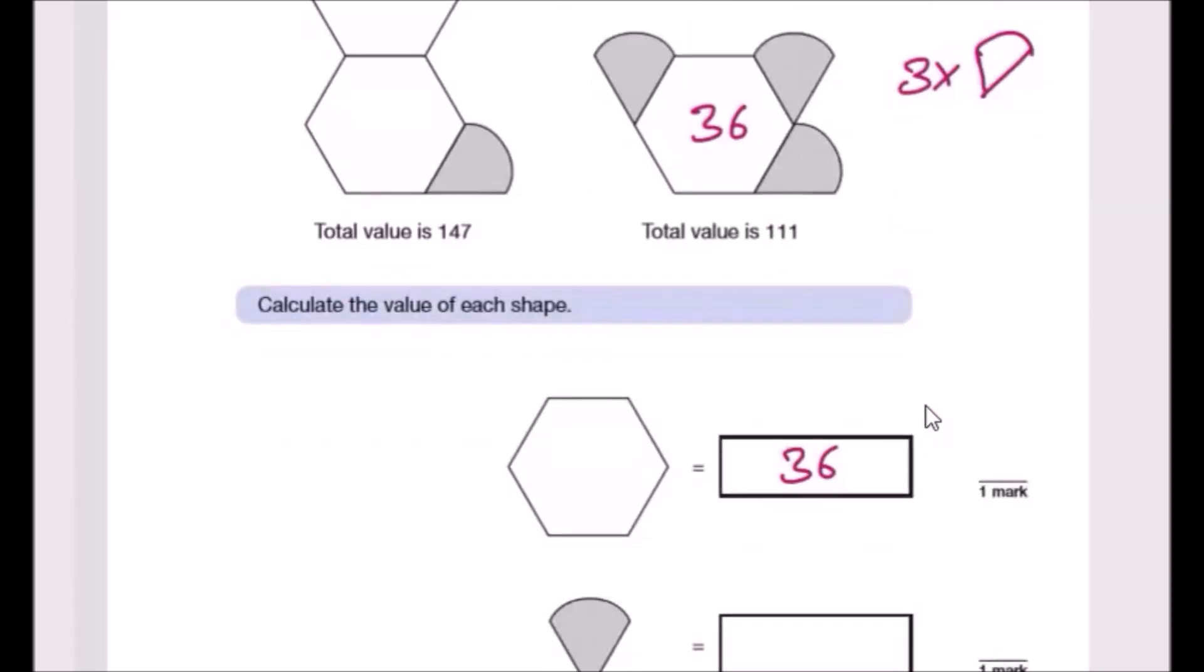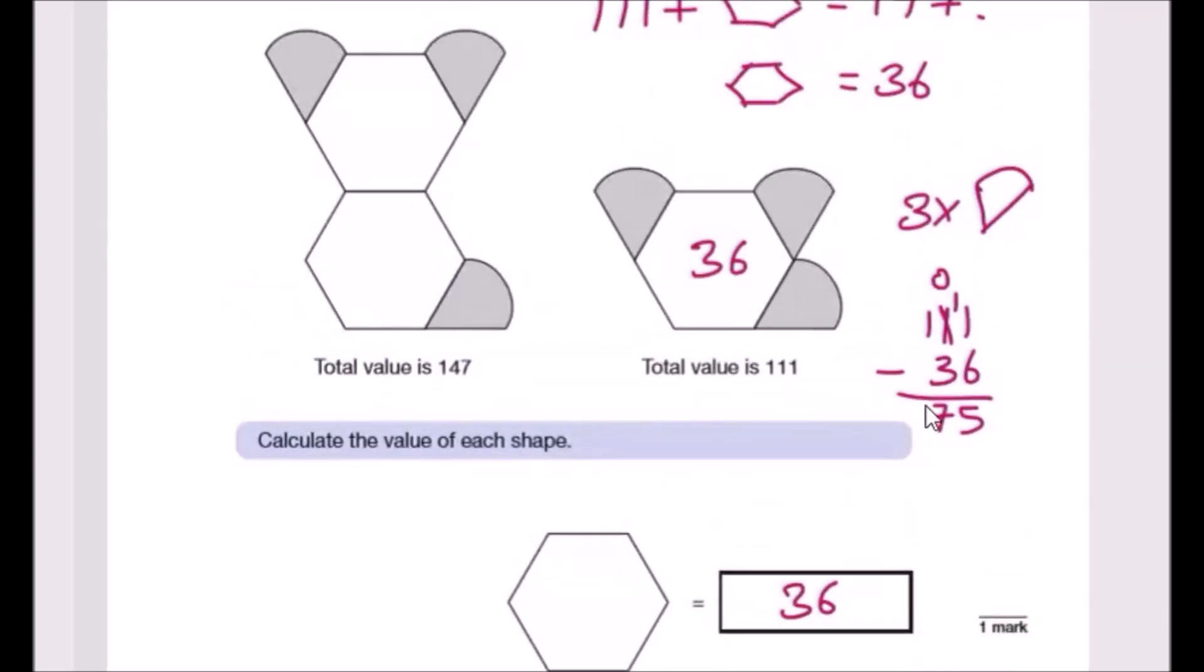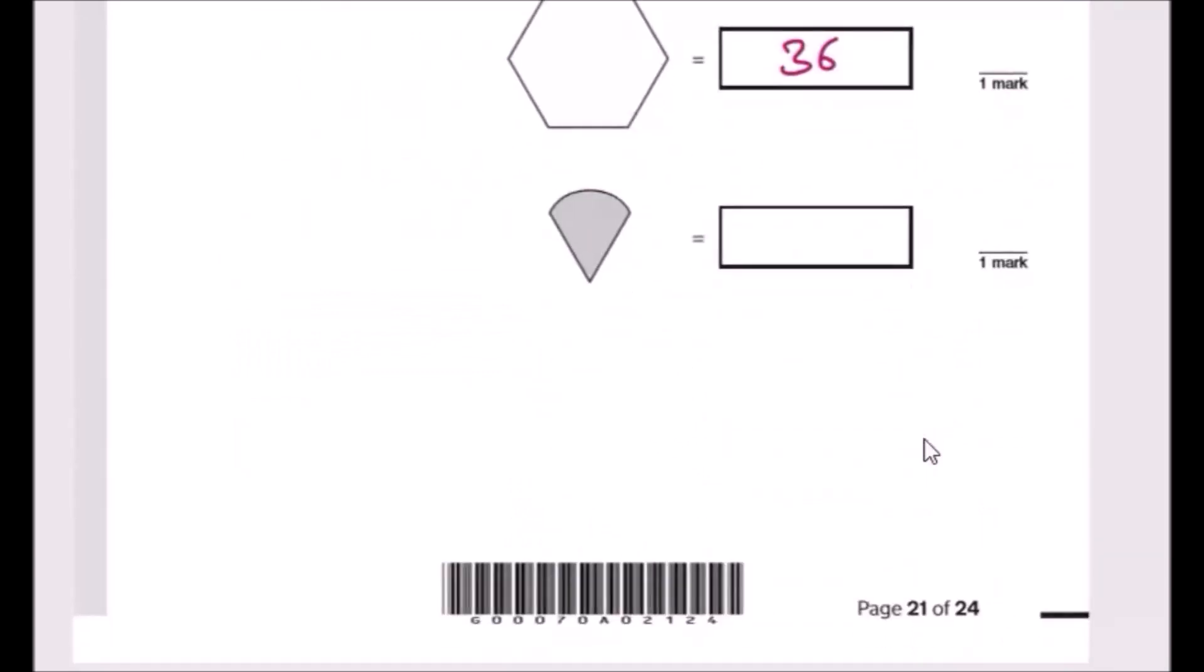Let's do some quick math here. 1 take away 6, you can't do, so borrow from its neighbor, which becomes zero, and this becomes 11. 11 to 6 is 5, and then 10 take away 3 is 7. So three of these equals 75, that means one of these you divide by 3 will give us 25.